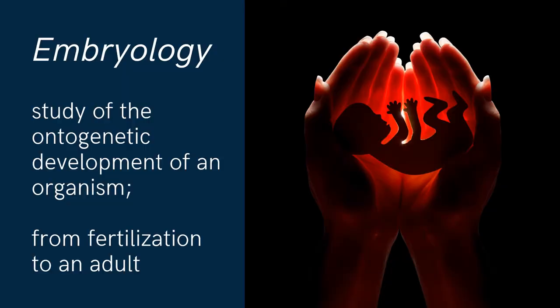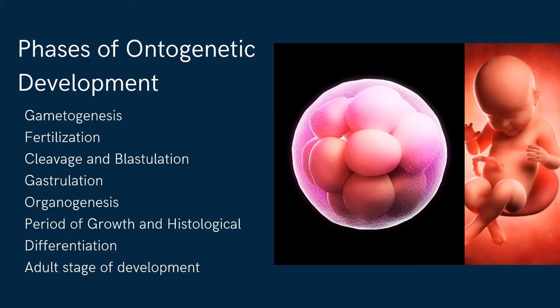Embryology is the study of the ontogenetic development of an organism. When you say ontogenetic development, it means it's a development from fertilization up to adulthood. It is generally divided into different phases such as gametogenesis, fertilization, cleavage and blastulation, gastrulation, organogenesis, period of growth and histological differentiation, as well as adult stage of development. All of these phases of ontogenetic development will be considered in the next series of lectures.